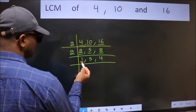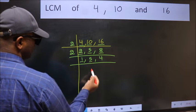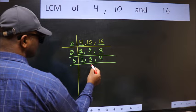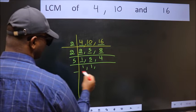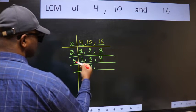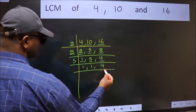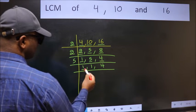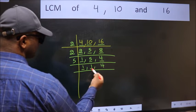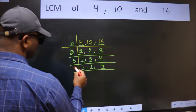Now we got 1 here, so focus on the next number 5. 5 is a prime number, so 5 times 1 is 5. The other number 4 — not divisible by 5, so we write it down as it is. Now we got 1 here and here, so focus on the next number 4. 4 times 2 is 4.